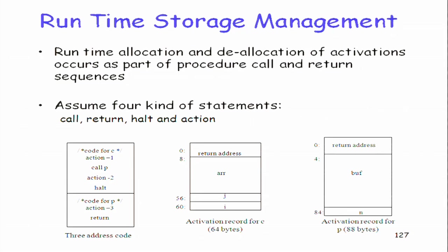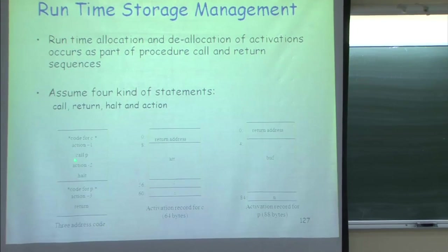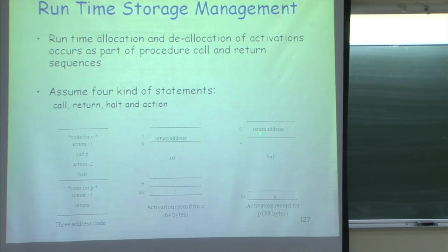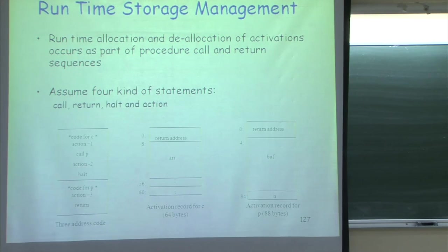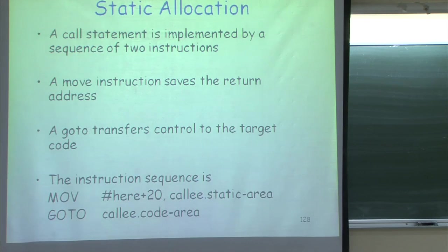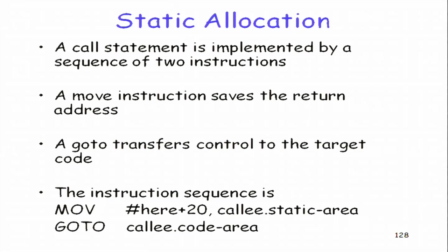When we make a call to P, we need to understand how to manipulate the data, and when we return, where we should jump. The code follows a specific sequence. For static allocation, the call statement is actually a sequence of two instructions: I manipulate the return address by using a move instruction to save it.